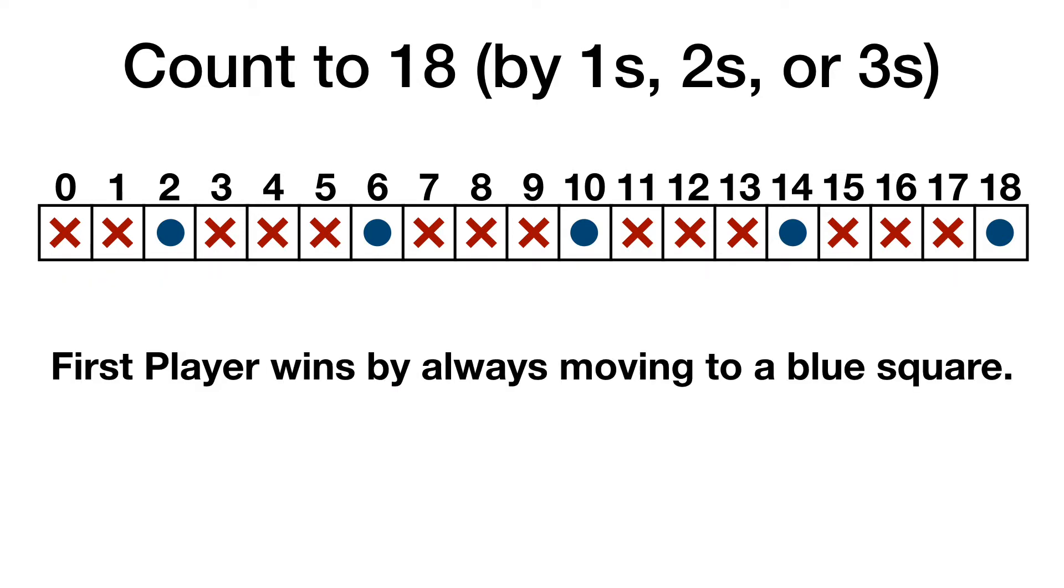So what is our conclusion? Well, from each red X square, we can always move to a blue dot square. But from each blue dot, you must move to a red X. That means that the first player can win by always jumping to a blue dot. The first player has a winning strategy.